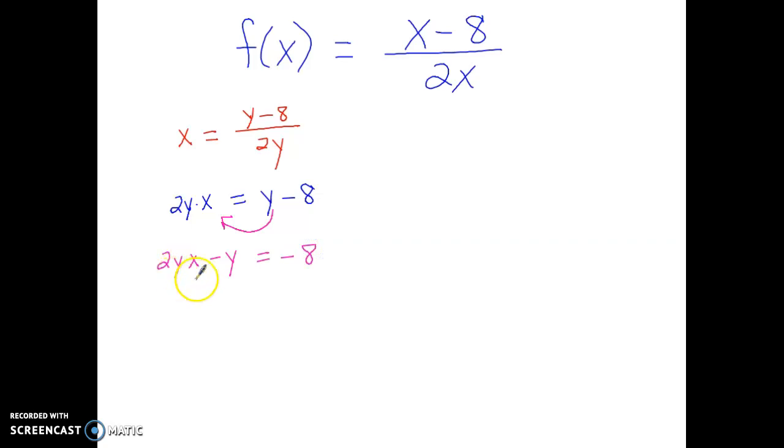Next, I have two terms with y in it. I can factor out that common factor of the letter y. This is the same thing as doing the distributed property backwards.